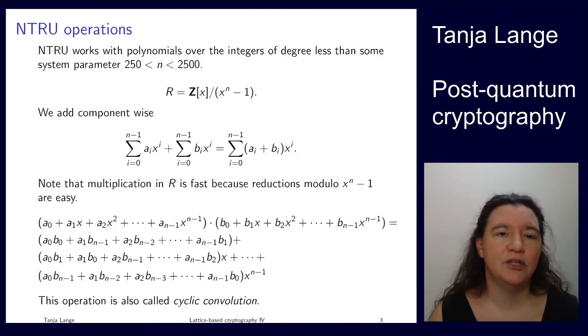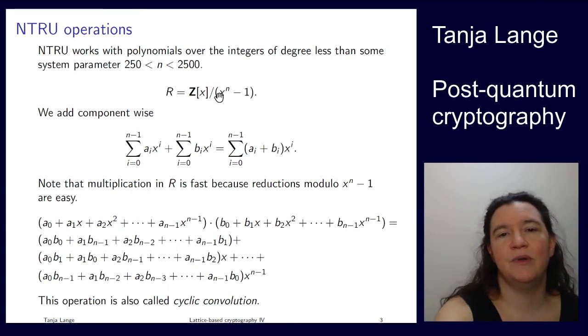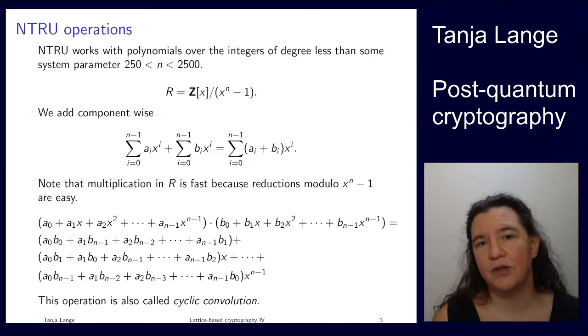So how does it work? Well, NTRU works with polynomials over integers. There is some parameter, a pretty large range of parameters. So we have this cyclotomic polynomial, or the nth roots of unity are the roots of this polynomial, and this n is between 250 and 2500.